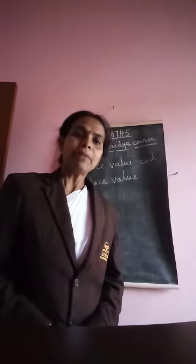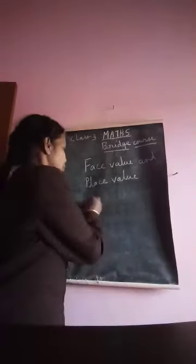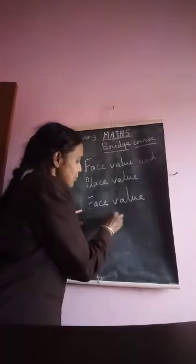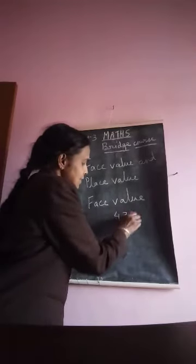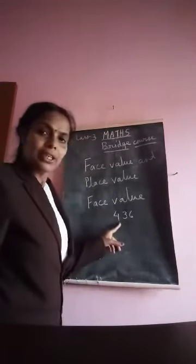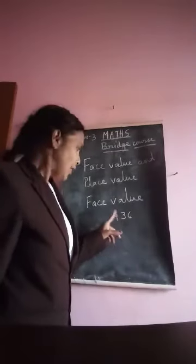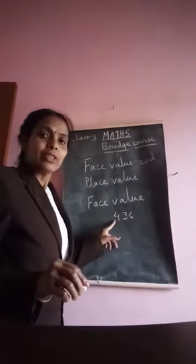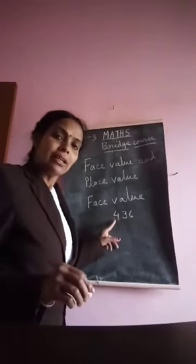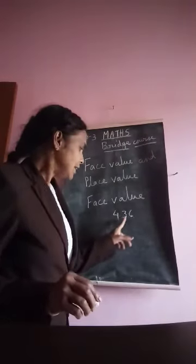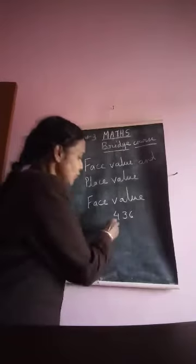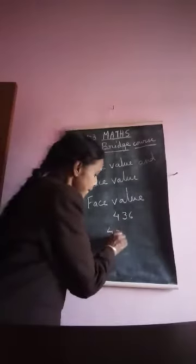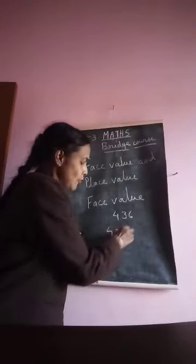Now let us see what is face value. Suppose 436 — the face value of 4 is 4 itself. Face value means whichever place the digit is in, it doesn't matter; the face value is the number itself. So in 436, face value of 4 is 4, and face value of 3 is 3.